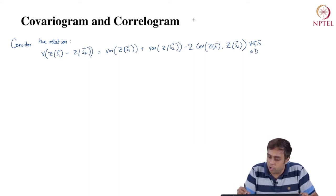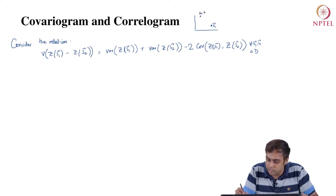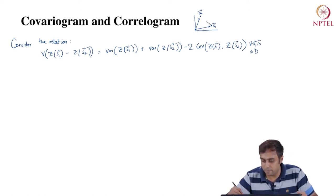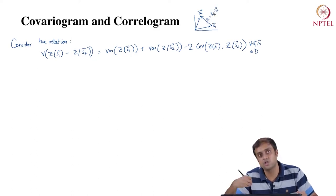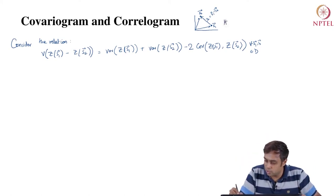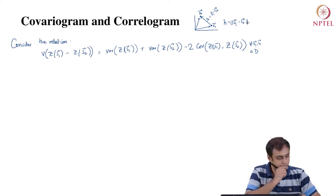We are talking about data delineated with a coordinate system where S1 is an XY coordinate and S2, which is S1 plus H, also has its own XY coordinate. The lag between them is the vector H, which is S1 minus S2. H encapsulates both distance and direction. The distance |H| equals the L2 norm of S1 minus S2.